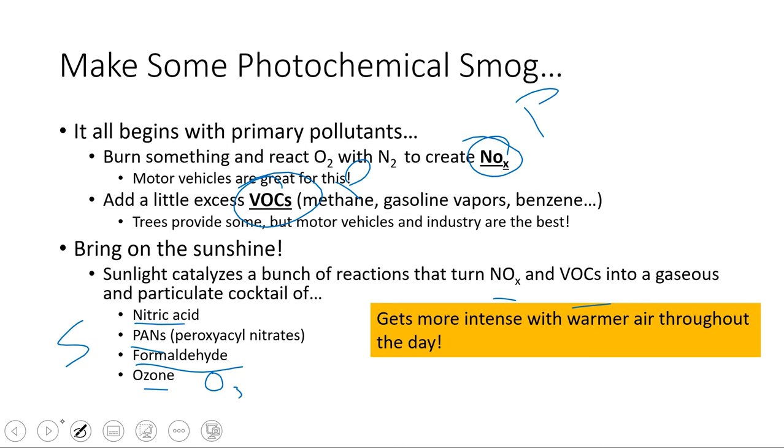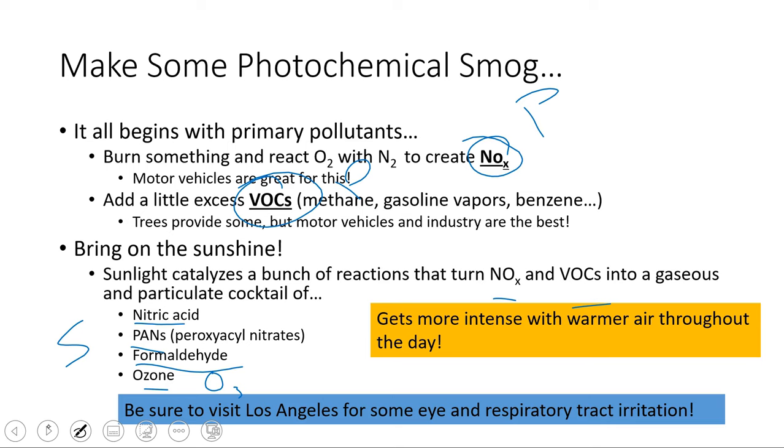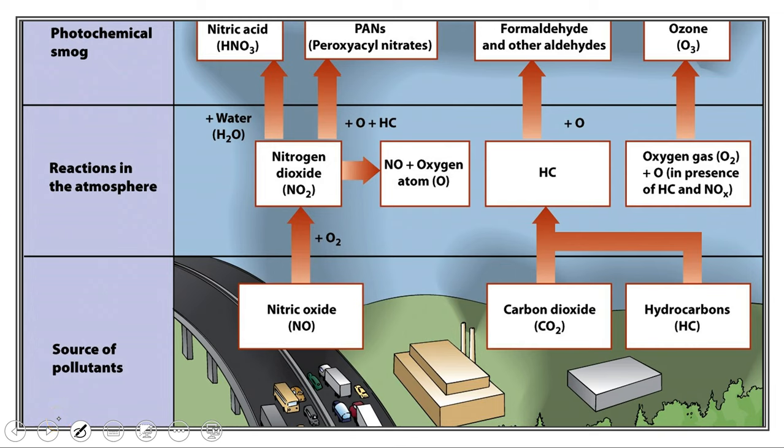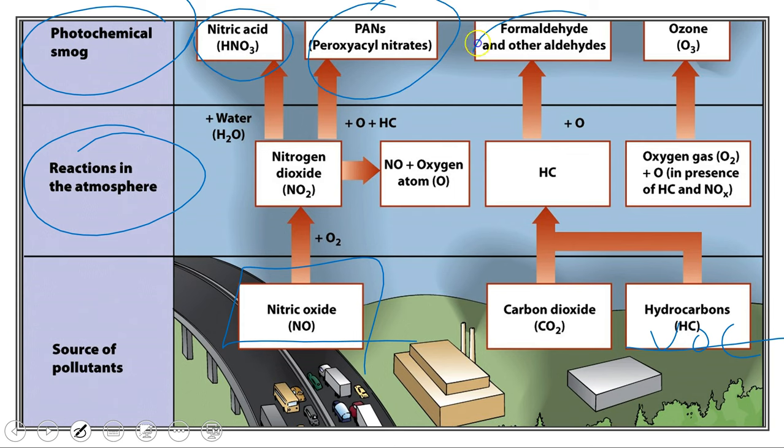It gets more intense throughout the day because it is catalyzed by sunlight and it does a little bit better as it gets warmer. The farther you go during the day, the more sunlight, the longer sunlight's been around, and the warmer it tends to get. So our photochemical smog gradually builds up throughout the day. If you want some photochemical smog, just be sure to visit Los Angeles and get yourself a little bit of eye and respiratory irritation. Here is a pretty cool graphic organizer from my old textbook. We have nitric oxides and hydrocarbons—these are our VOCs—those are our primary pollutants. We go through some reactions in the atmosphere and we form that brownish, yucky haze of nitric acid, peroxyacyl nitrates, formaldehyde, and ozone.